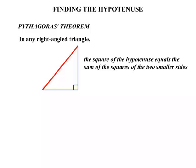Now that word hypotenuse indicates the longest side in a right-angled triangle. And if we consider where the right angle is, the hypotenuse is always directly opposite that.